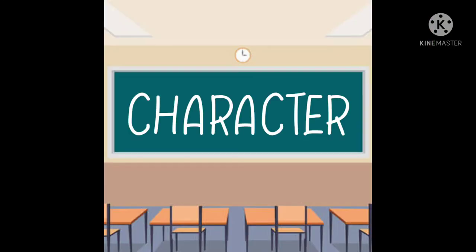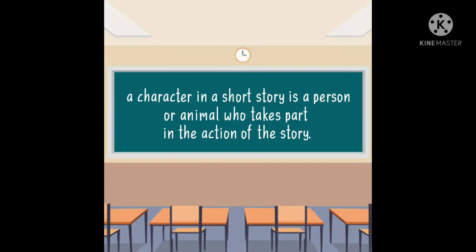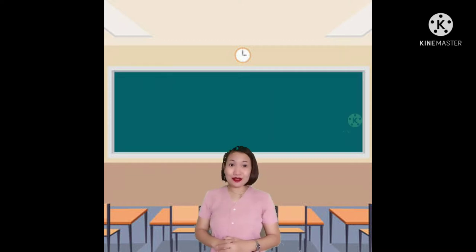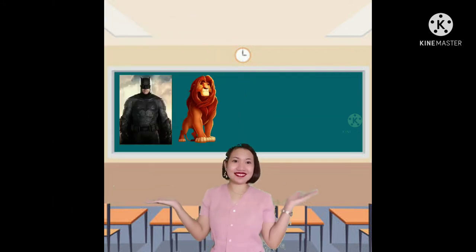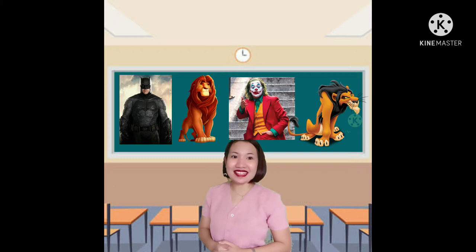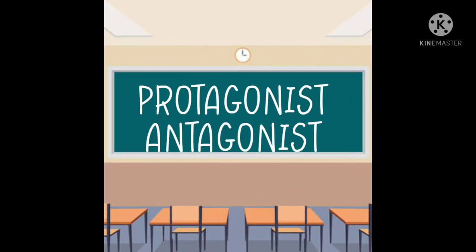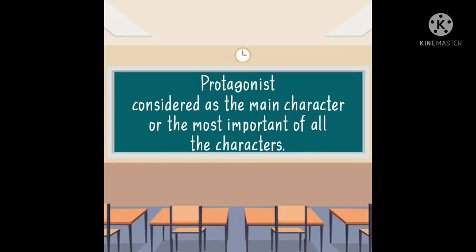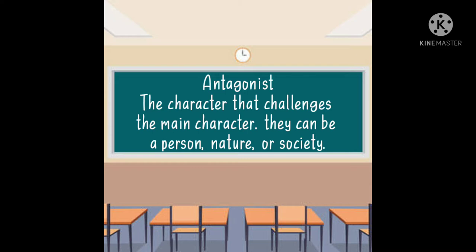The first element of a short story is character. A character in a short story is a person or animal who takes part in the action of the story. Do you know the two types of characters? Let me show you some pictures. They are the protagonist and antagonist. The protagonist is considered the main character, or the most important of all the characters. The antagonist is the character that challenges the main character. They can be a person, nature, or society.